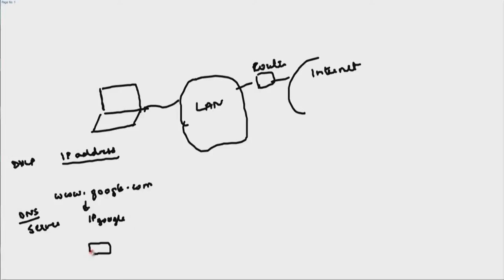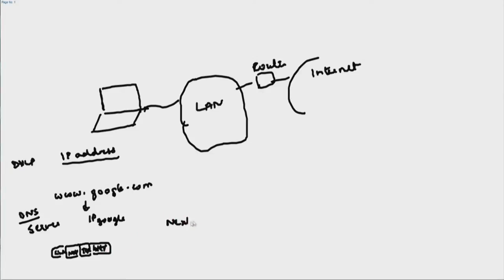Once DNS tells you the IP address of Google, you assemble a packet saying you want the main page of Google. This packet has some HTTP content, then you add TCP headers, then network headers, then link headers, and then you push it out onto the LAN. In order to send this, you need to know who your next hop router is. This information also your machine should have somewhere.